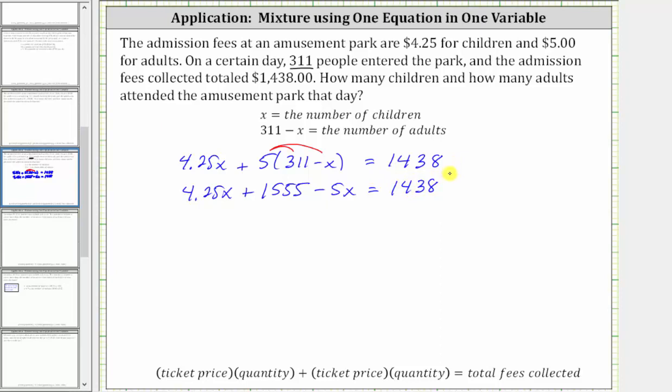The next step is to combine like terms. Notice here we have two x terms. 4.25x minus 5x is negative 0.75x, giving us negative 0.75x plus 1,555 equals 1,438.